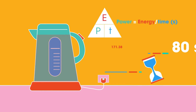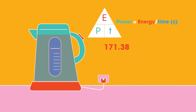So we get 171.38 divided by 80, which equals 2.14 kilojoules per second, or 2.14 kilowatts. This answer will be slightly lower than the actual power due to the kettle being uninsulated.